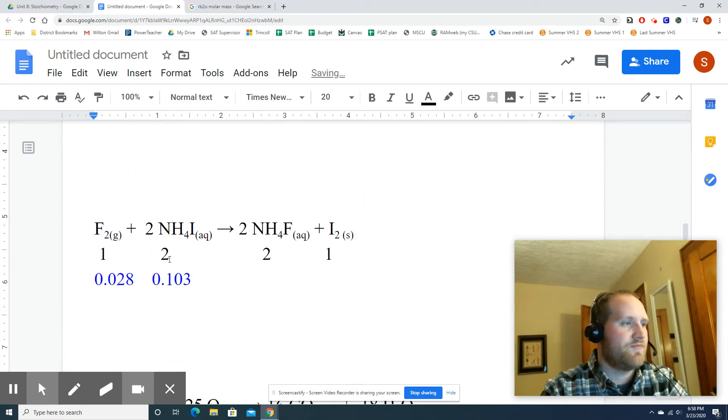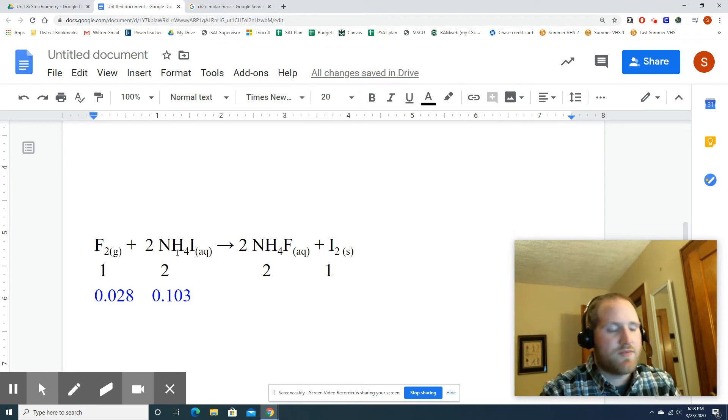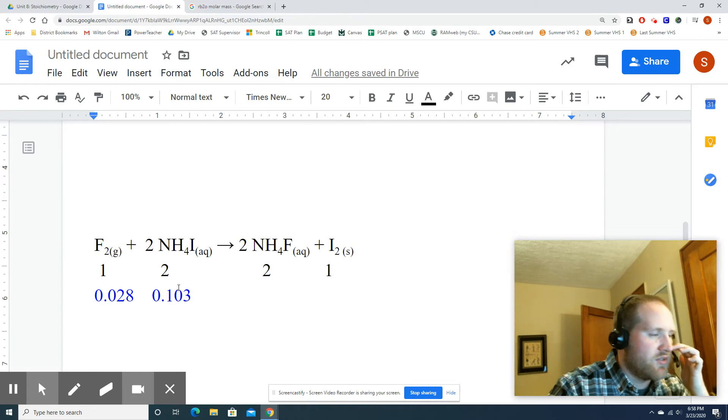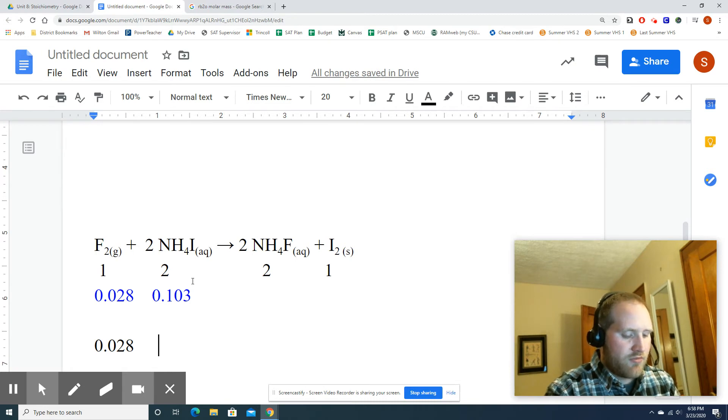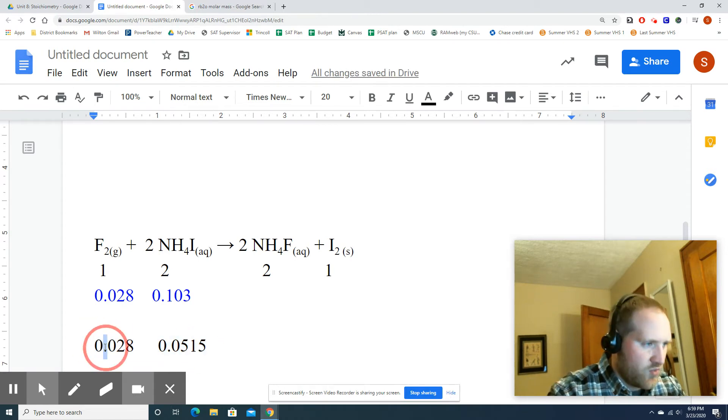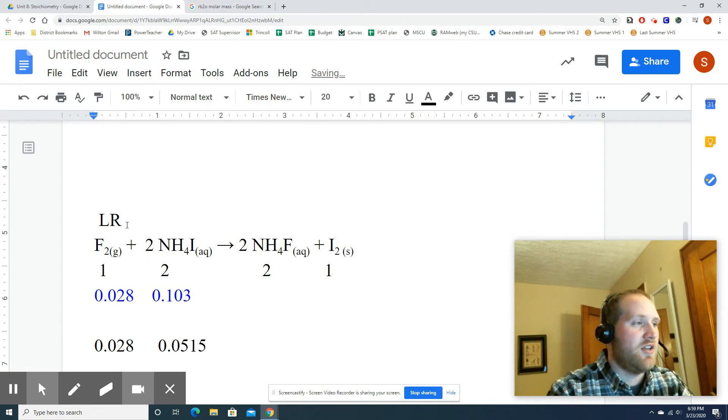Let's do another example here. And you might want to pause. So identifying the LR. Well, 0.028 and 0.103. You've got to be careful with these numbers when you're dealing with small decimals. So this number divided by 1 is obviously just going to be the same number, 0.028. What about this one? 0.103 divided by 2 is going to be 0.0515. All right. Which number is smaller? This one, 0.02 is smaller than 0.05. Because this is a smaller number, that's my LR, which makes that my ER. And just like that, we're good.